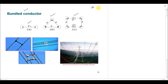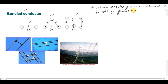The first advantage of using bundle conductors is that corona discharges are reduced. As we know, corona discharges occur when we have a large voltage gradient over the surface of the conductor. So if the voltage gradient is reduced, the corona discharges will reduce. The voltage gradient is the difference in potential gradient over a conductor surface. If corona is reduced, the power losses over the surface of the transmission line are also reduced.